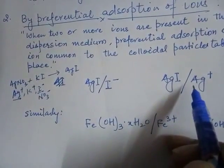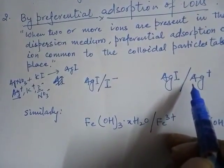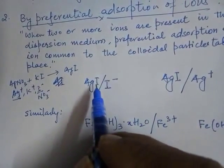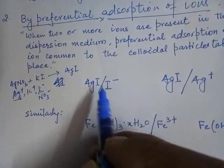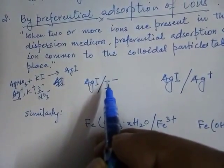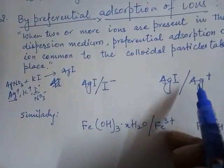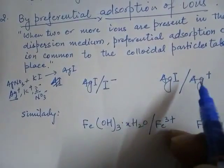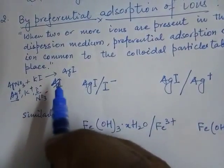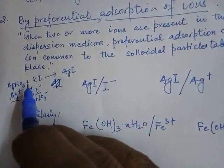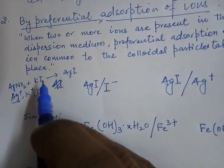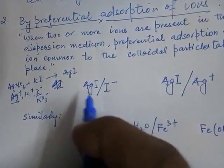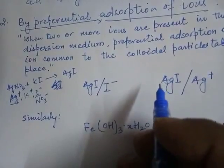When I⁻ is adsorbed on the silver iodide sol, it attains a negative charge. When Ag⁺ is adsorbed, it acquires a positive charge. Whether positive or negative charge develops depends on the method of preparation — for example, if AgNO₃ is mixed into KI or vice versa.